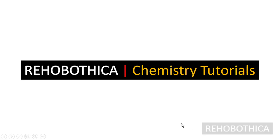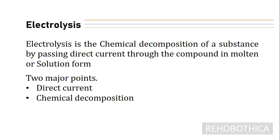Good day listeners. Today we're going to be taking tutorials on chemistry, which is a major focus in this channel. We're going to be talking about electrolysis. Electrolysis is the chemical decomposition of a compound — by definition, by passing direct current through the compound in its molten or solution form. The two key things to know: it uses direct current, and it is used to decompose a compound.